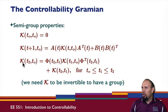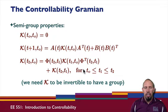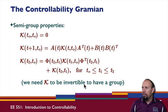Our controllability Gramian from t0 to t2 satisfies this property: it equals the t1 to t2 Gramian plus the t0 to t1 Gramian with the state transition matrix on either side. In general, we don't know if k is going to be invertible, so we don't have a group — we only have semi-group properties.